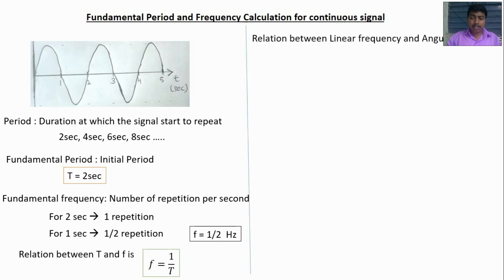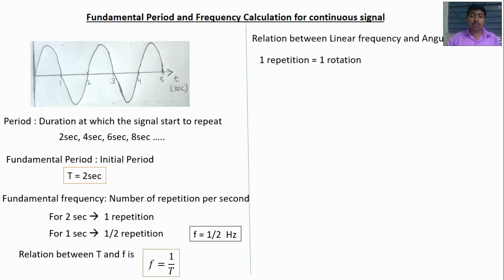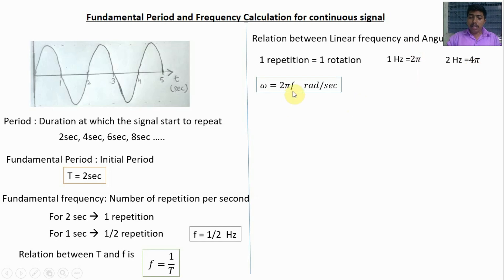The relation between linear frequency and angular frequency: F means linear frequency, and angular frequency means omega (ω). One repetition is equal to one rotation; one rotation means 360 degrees, that means 2π. So 1 Hertz equals 2π, and 2 Hertz means 4π. The relation between linear frequency and angular frequency is: ω = 2πF. When F = 1, ω = 2π radians per second; when F = 2, ω = 4π. You should remember this formula.